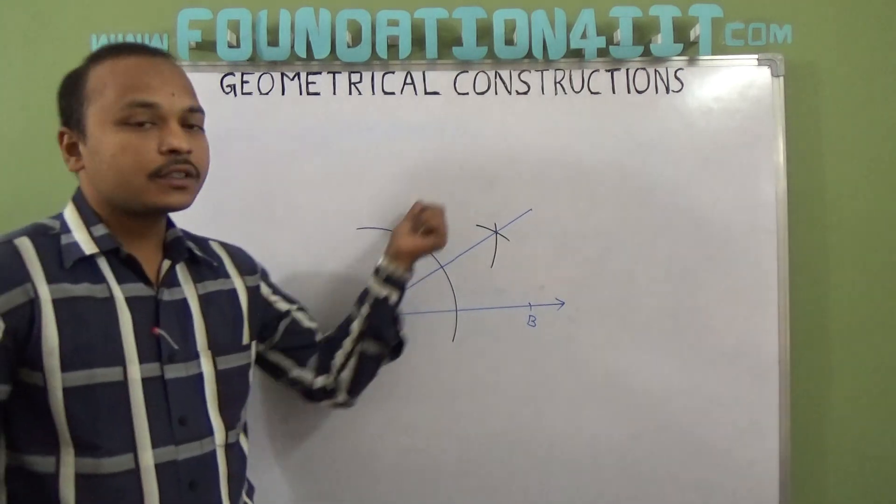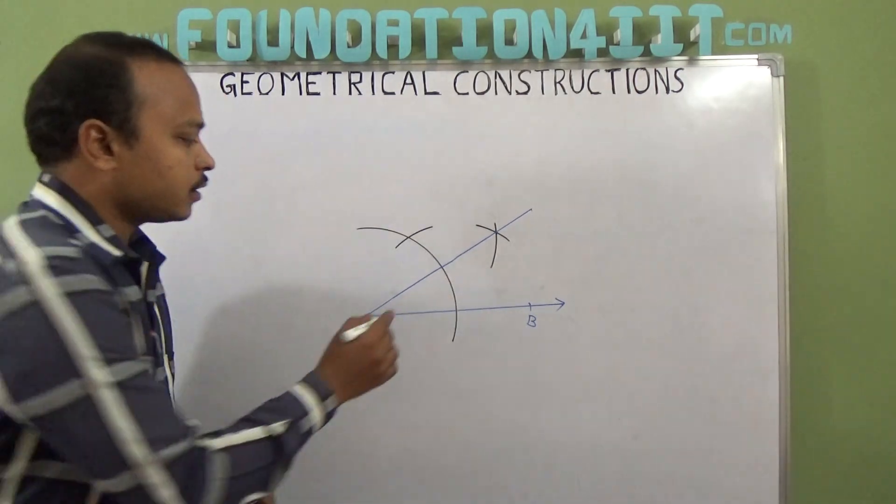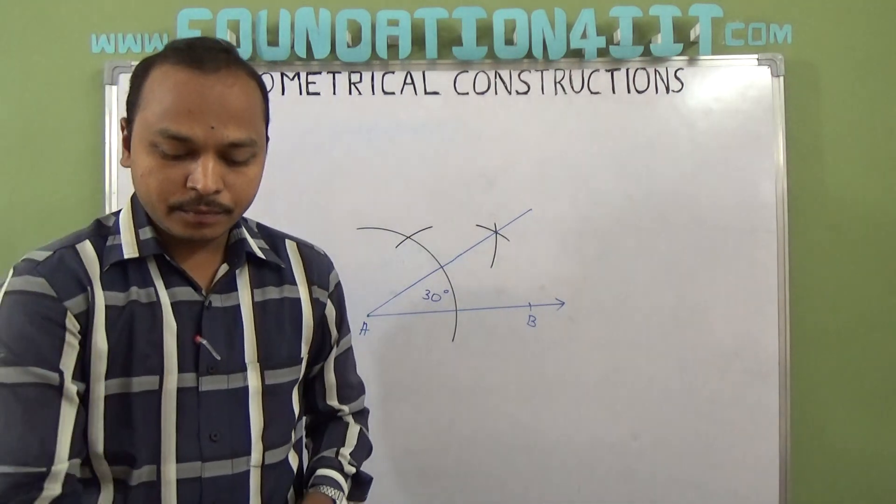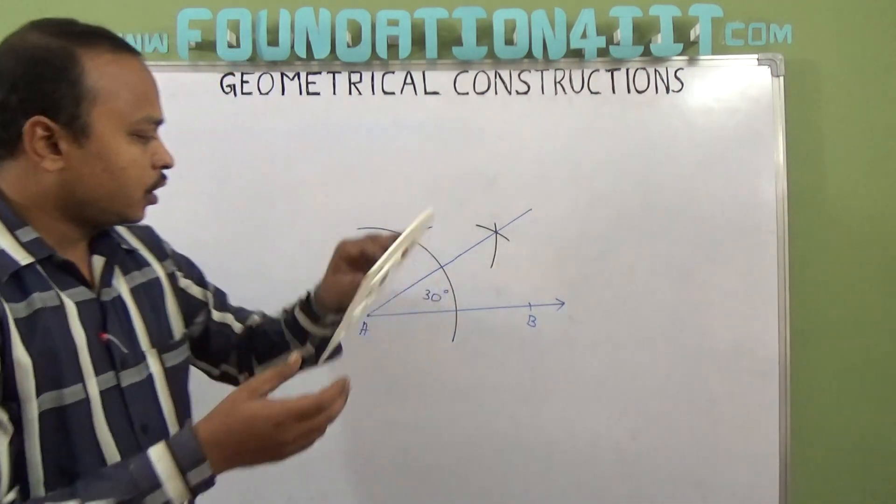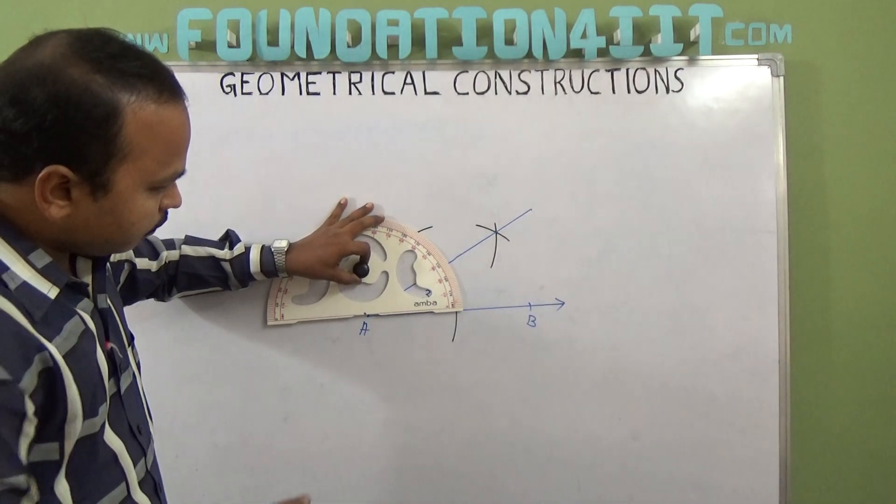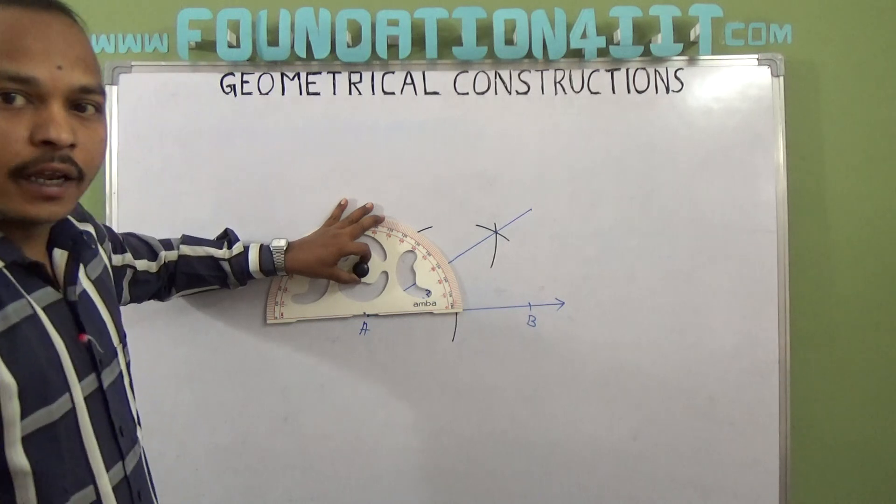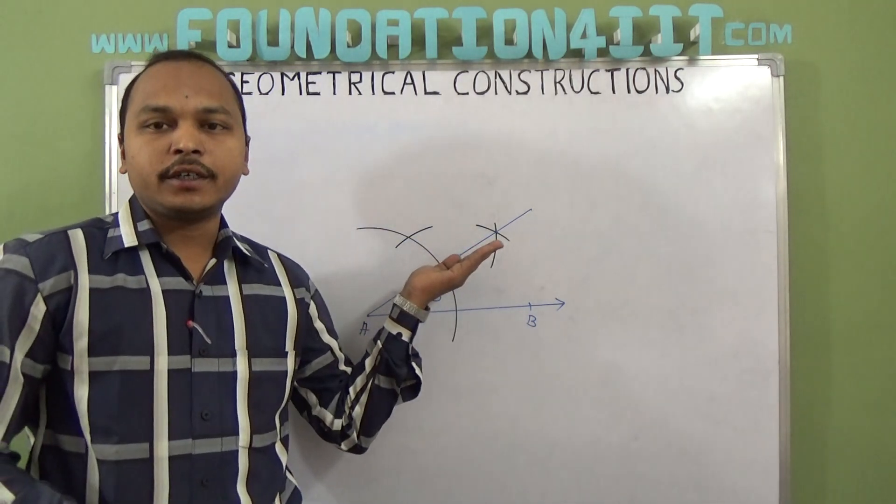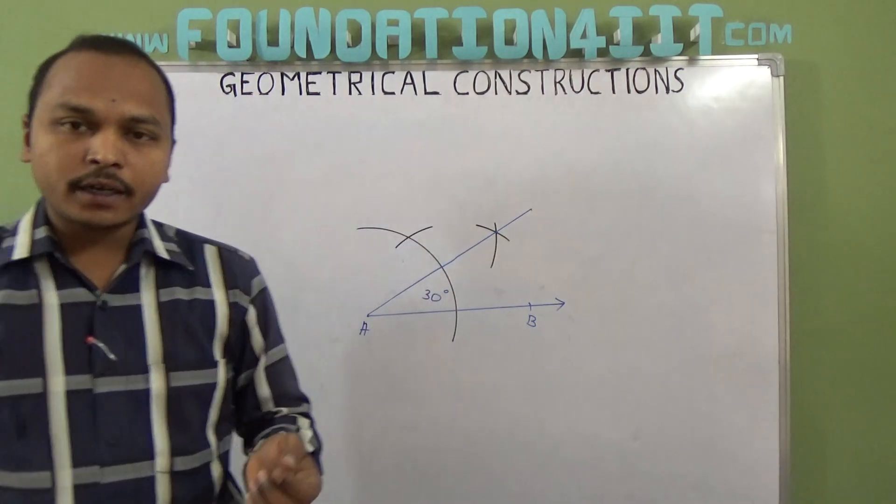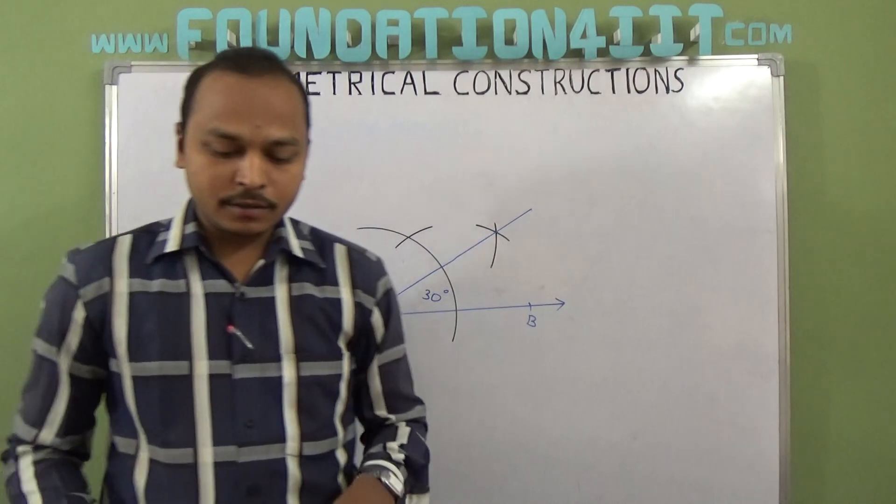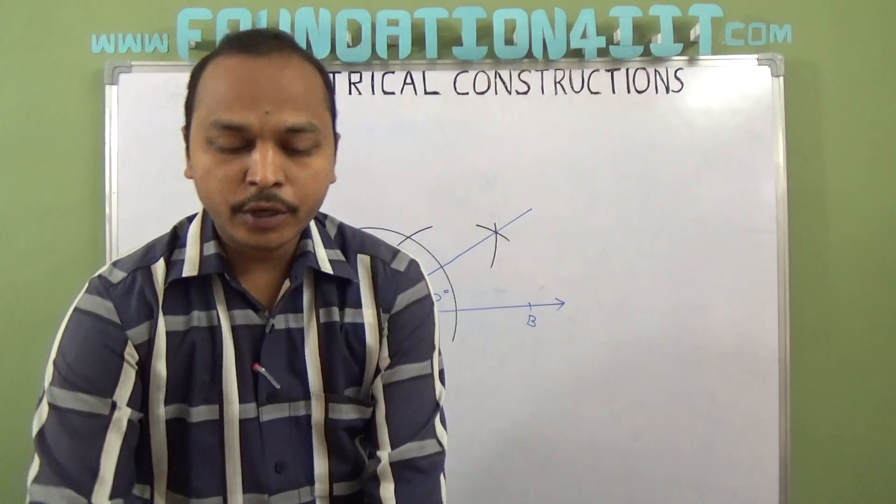So no need of constructing 60 separately. Directly this is a 30 degrees angle. You can check with protractor also. Keep your protractor here and it will show exactly 30 degrees. This is zero degree and this is 30 degrees. So without constructing 60 directly, only the 60 mark we're taking and then bisecting. One more example I'll show you.